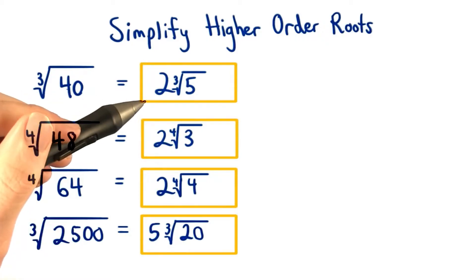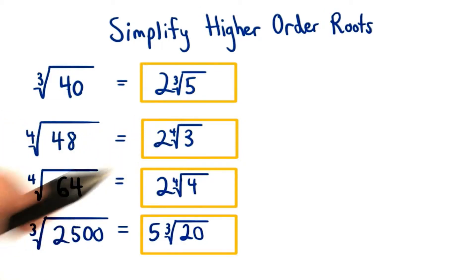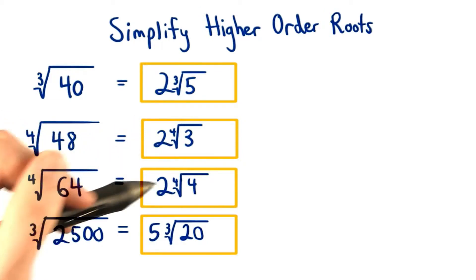For the cube root of 40, we have 2 times the cube root of 5. For the fourth root of 48, we have 2 times the fourth root of 3. For the fourth root of 64, we have 2 times the fourth root of 4. And finally, for our last answer, we'll have 5 times the cube root of 20.